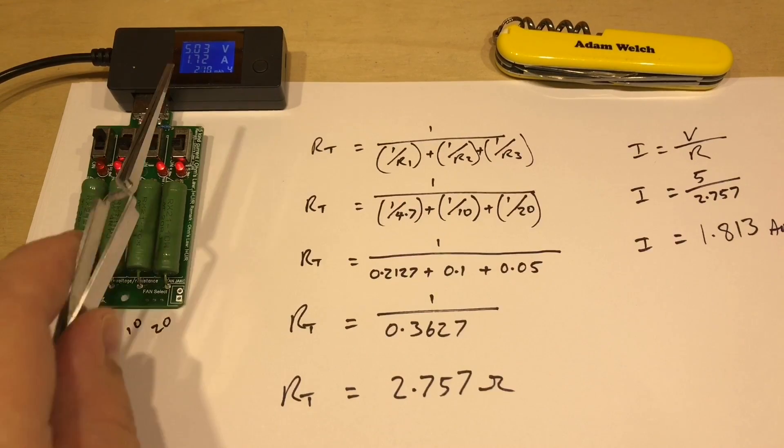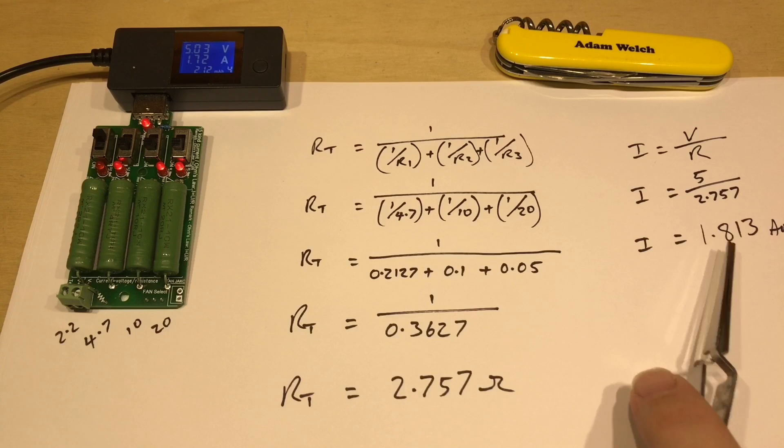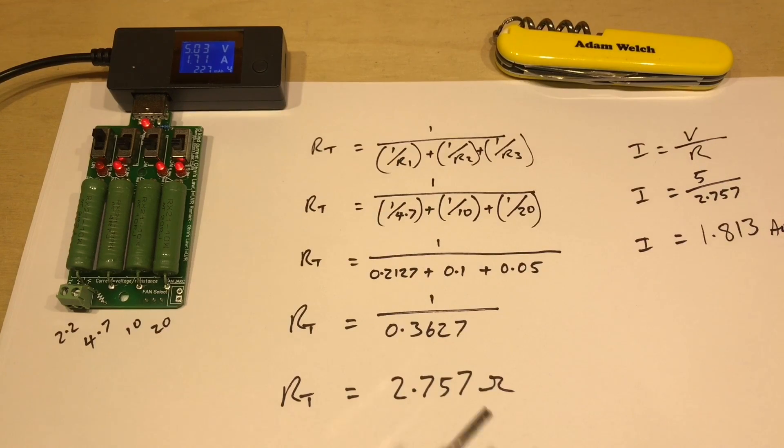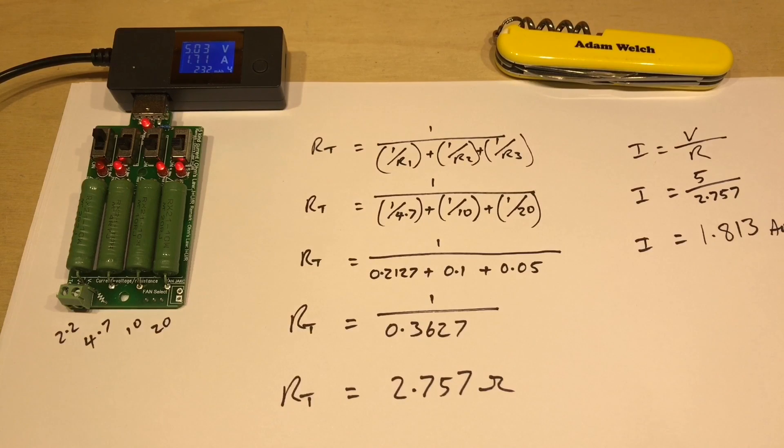So why the discrepancy here between 1.7 and 1.8 amps, what's the 100 milliamp difference? Well you'll notice that the total resistance here of 2.75 ohms and in the last example is always lower than each of the individual resistors in the circuit. And when we get down to this low level 2.75 ohms, well there's various other things I suspect that could be taking effect.